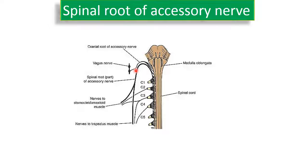Shortly after exiting the jugular foramen, the spinal root separates from the cranial root and descends down in the neck, supplies the sternocleidomastoid, crosses across the posterior triangle of the neck, and supplies the trapezius muscle.